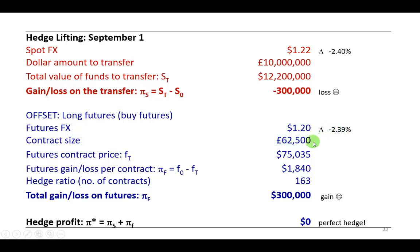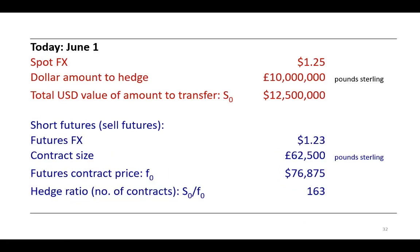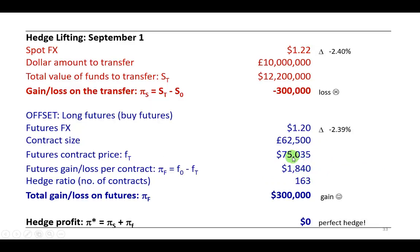So on a per contract basis, that comes out to $75,035. So as you can see, you have a gain of $1,840, which is the difference between the price at which you sold futures, $76,875, and the lower price at which you're buying back futures, $75,035. So this is your gain per contract. And that's your profit function right there.